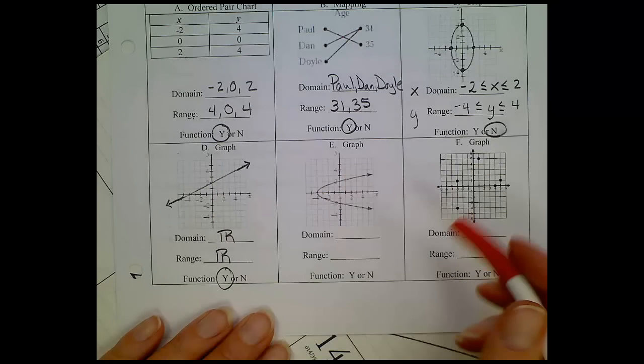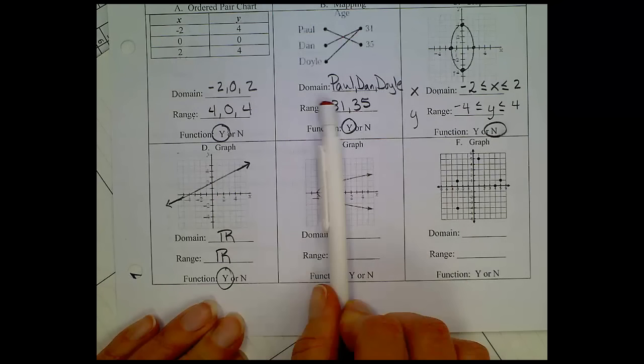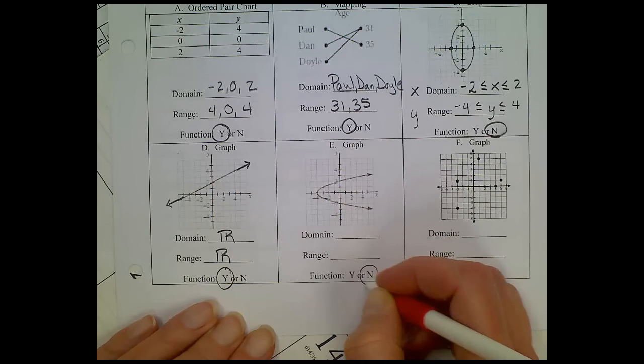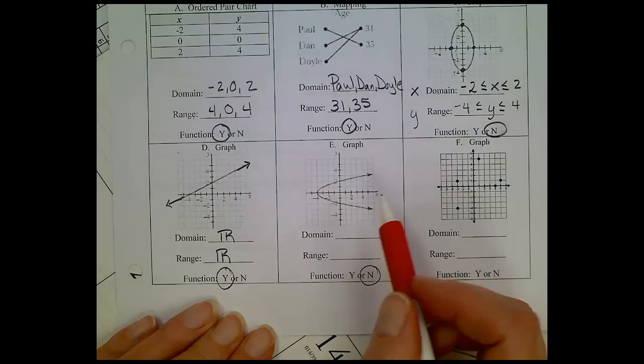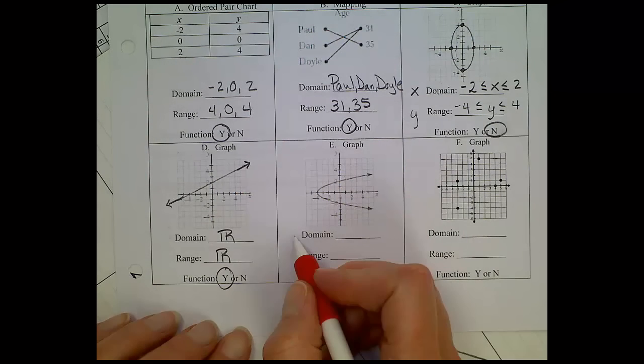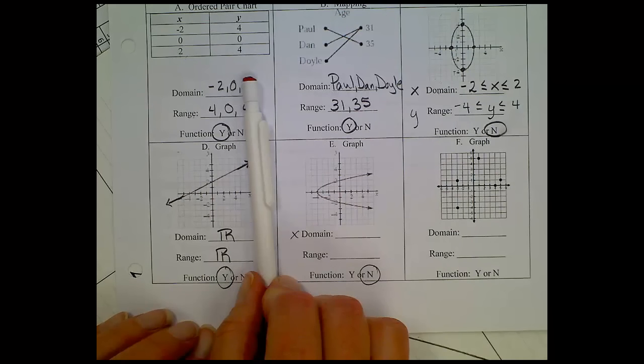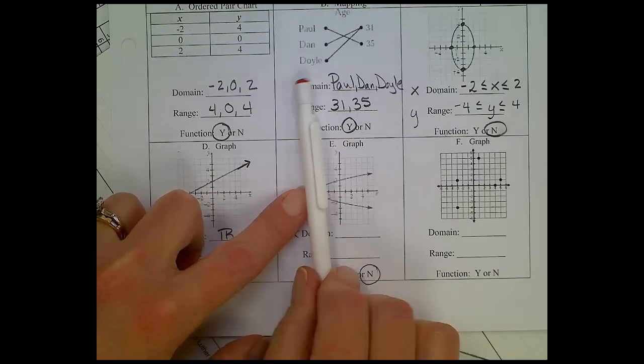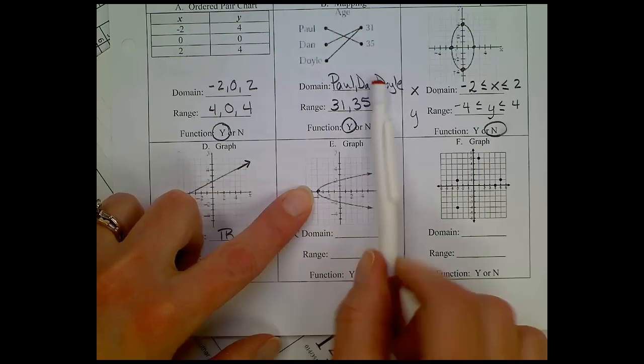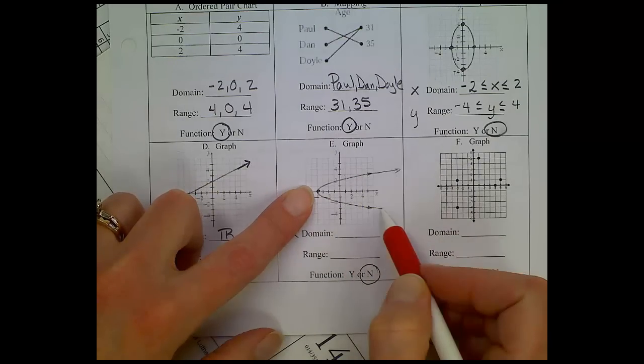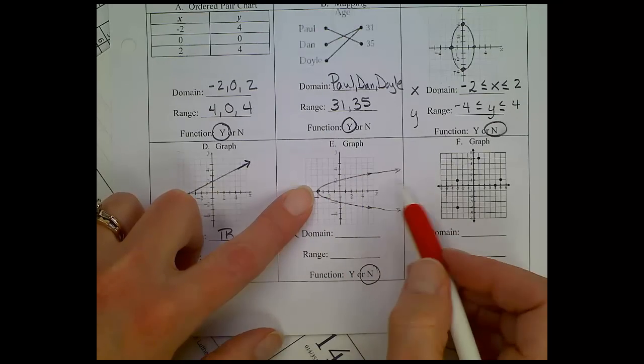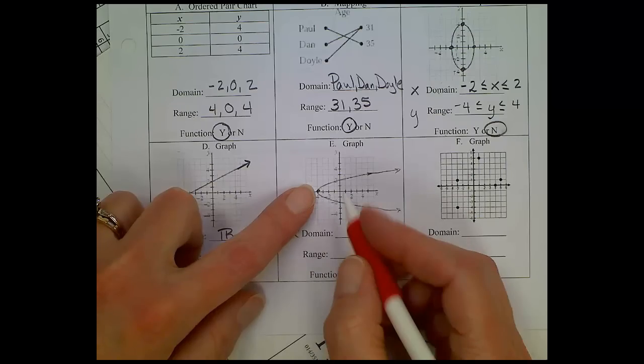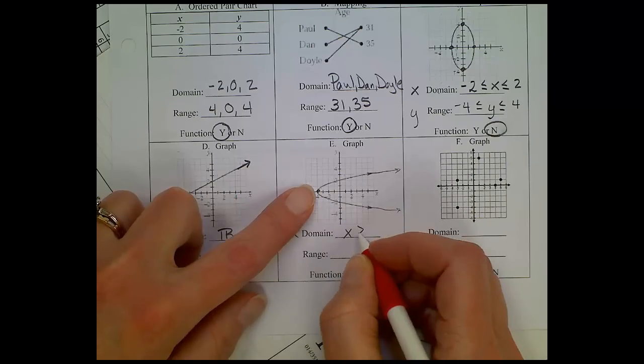Looking at letter e, is that one a function? Nope. Any vertical line can hit this graph two times, or more than once, so that would be a no. Domain for this one. Domain, remember, you're going along your x-axis. Vertical line test. Graph starts when? x is negative four, and this graph, it has arrows on it. It's going to go forward forever, so this will not end. So, my solution here is any time x is greater than or equal to a negative four.